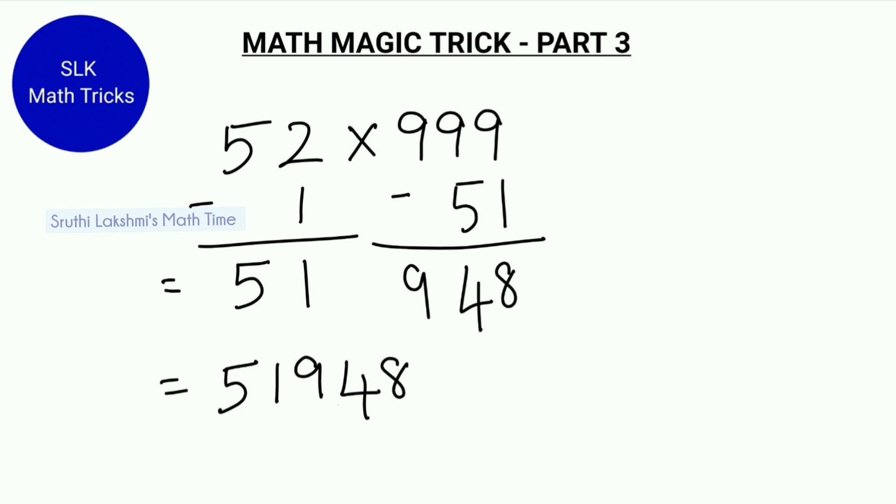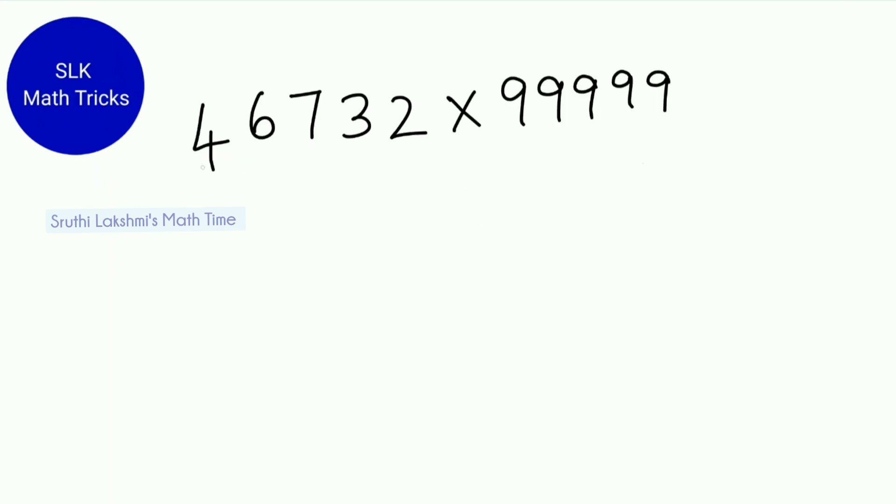See how easy this method is? Let's see another example: 46732 into 99999. So what is 1 less than 46732?